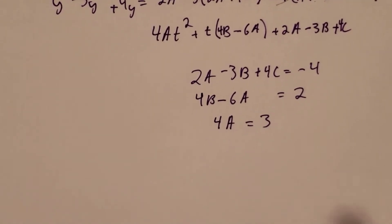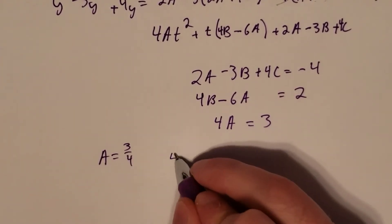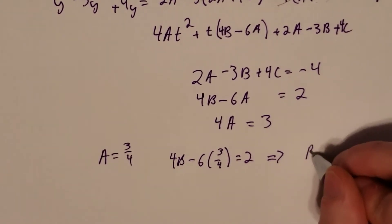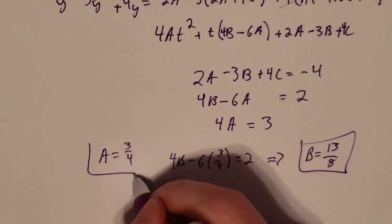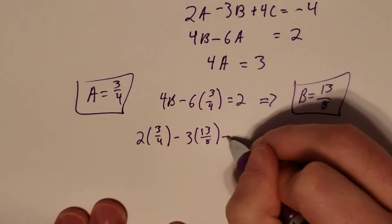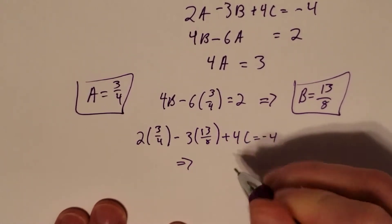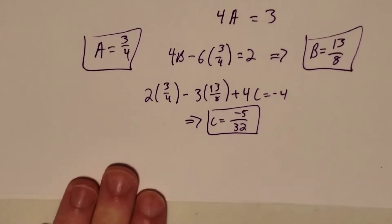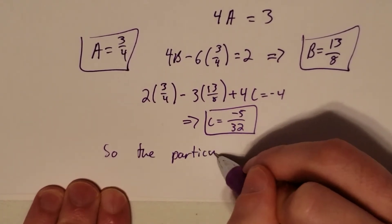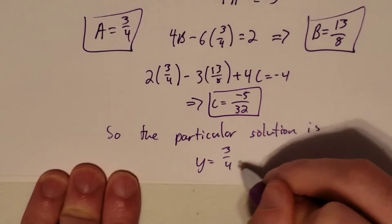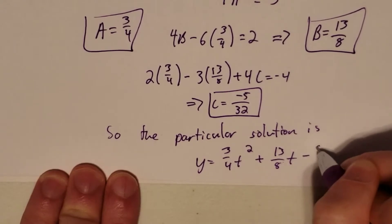When we solve all this, we get a is equal to 3/4. Plugging a into the second equation: 4b minus 6 times 3/4 equals 2, which gives b equal to 13/8. Then plugging into the first equation gives c equal to negative 5/32. This tells us that our particular solution is y equal to (3/4)t squared plus (13/8)t minus 5/32.